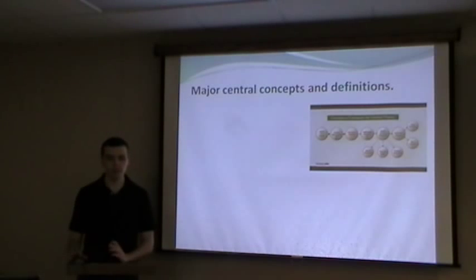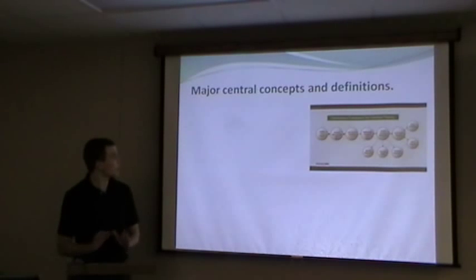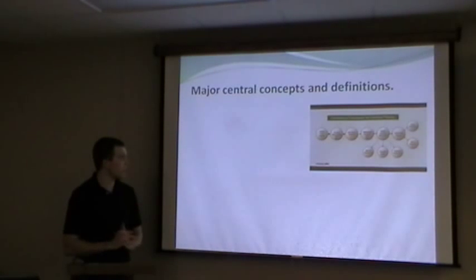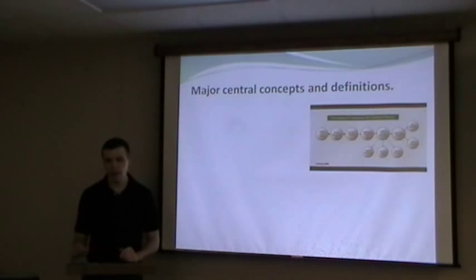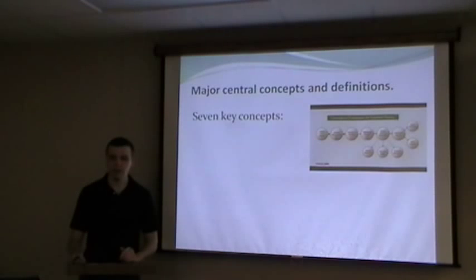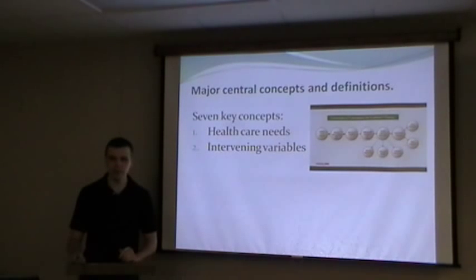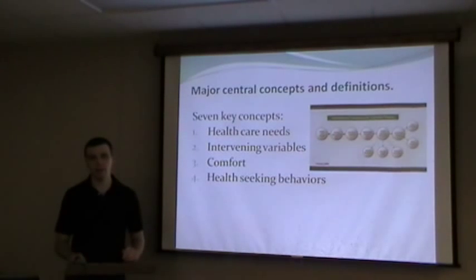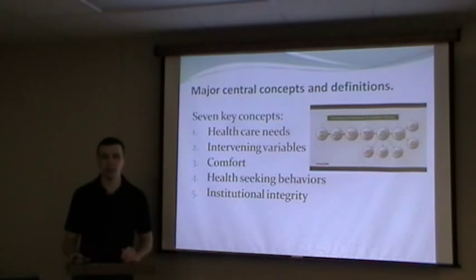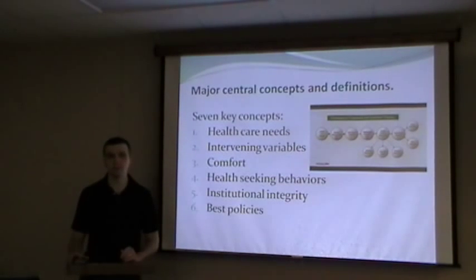There are seven major concepts that are part of Kolkaba's framework and theory: healthcare needs, intervening variables, comfort, health-seeking behaviors, institutional integrity, best policies, and best practices.